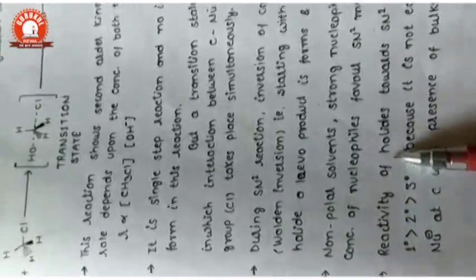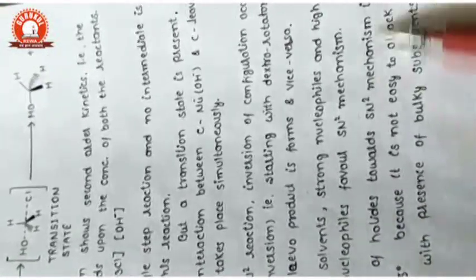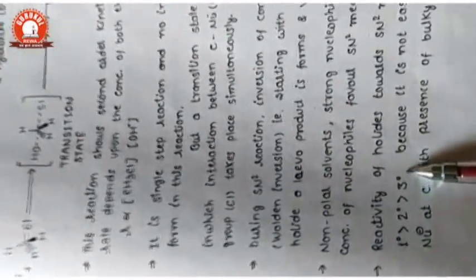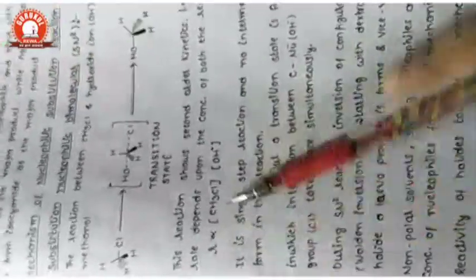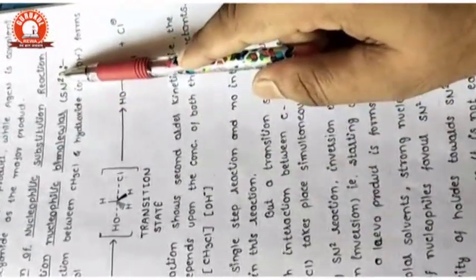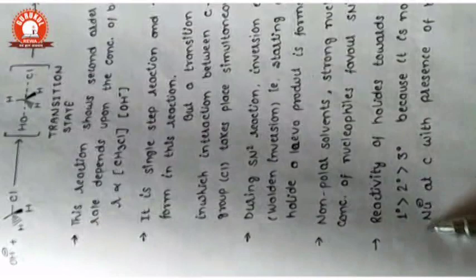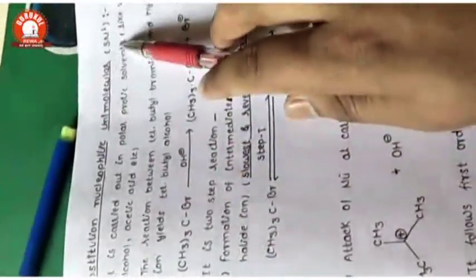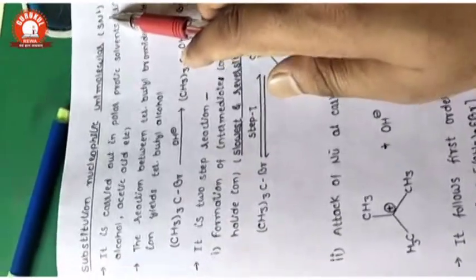An important point — and an objective question — is the reactivity of halides toward SN2. The trick is: SN2 prefers the smaller, less hindered substrate. So the reactivity order for SN2 is primary > secondary > tertiary. Primary halides are most reactive in SN2.